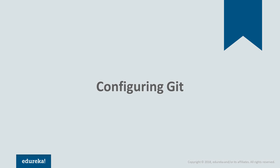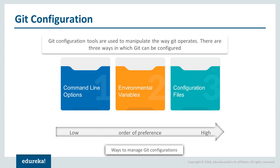Let's understand how the Git configuration works. Git operates in a more customized fashion by introducing several important configuration settings and the hook system. There are many ways to configure how Git will operate. In all, there are three ways to manage the configuration, arranged in order of preference: the first is command line options, the second is environment variables, and the third is configuration files.